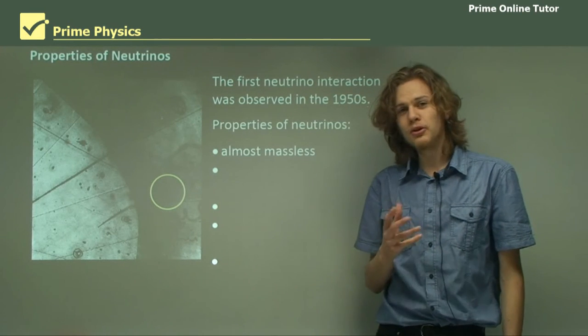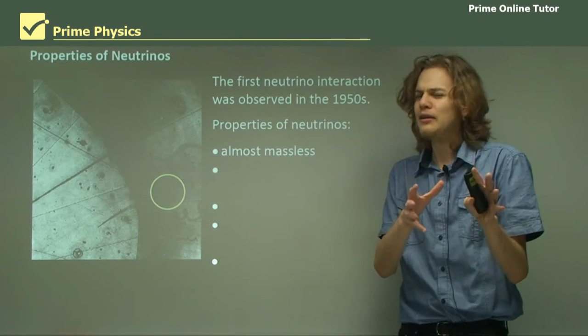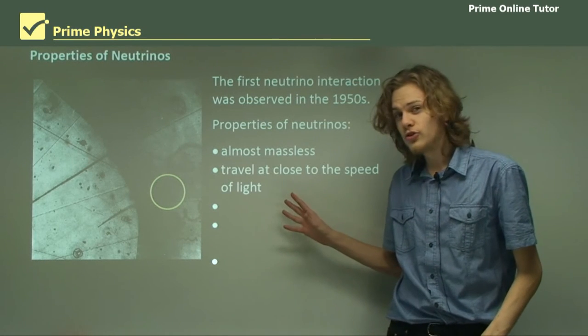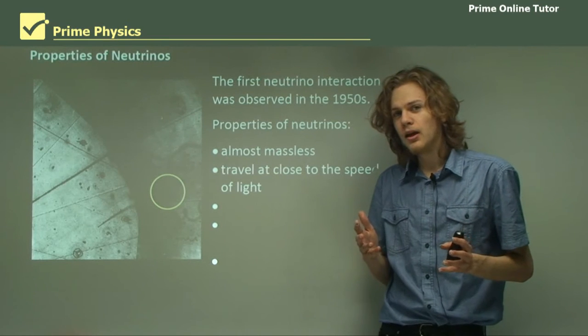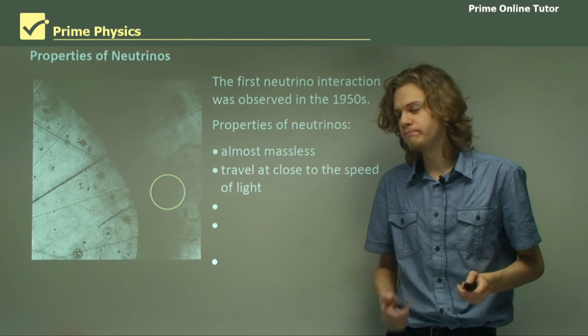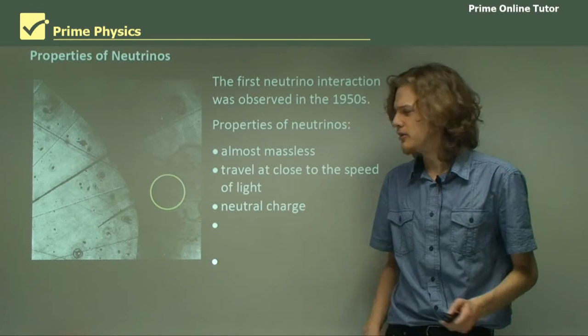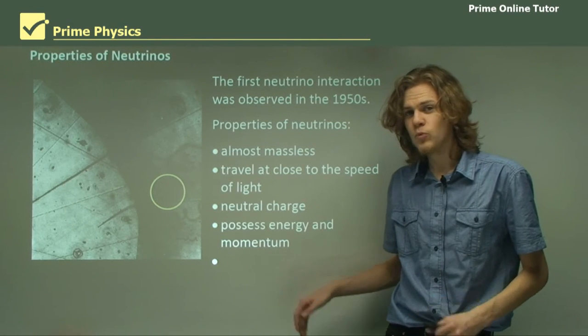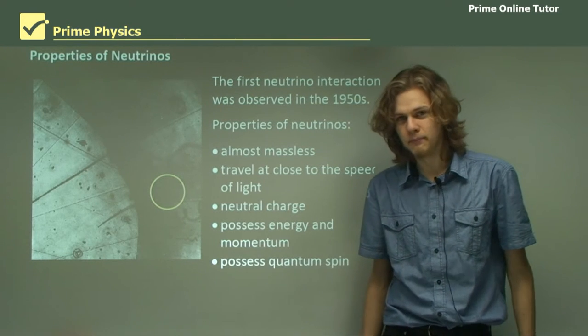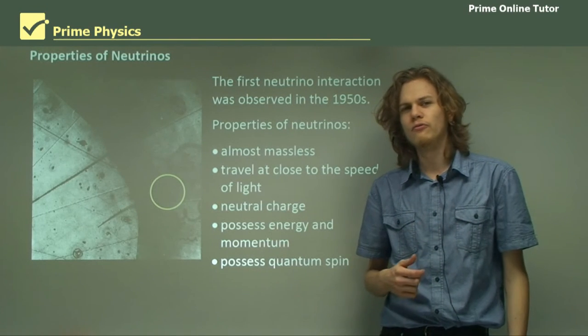We have a few properties of neutrinos that we've learned about now. They're almost massless, not quite completely massless as was believed about 10 years ago. They travel close to the speed of light, which is why they have so much energy. They have neutral charge, not positive or negative, which makes them very hard to find. They possess energy and momentum, which is why they can carry energy out of beta decay. And they possess quantum spin.